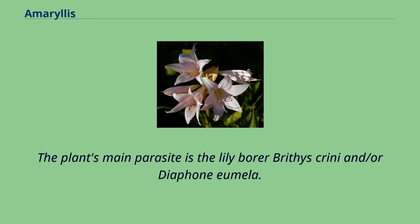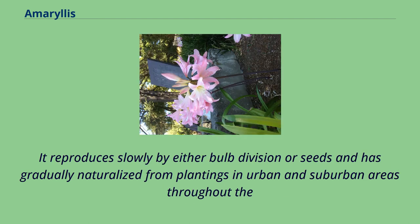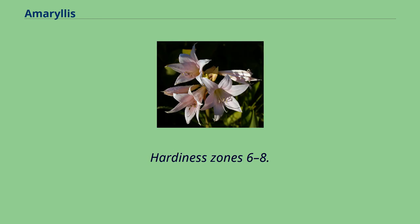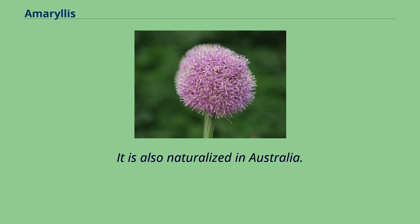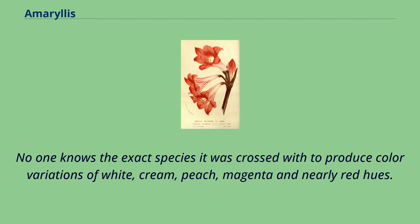The plant's main parasite is the lily borer Brithys crini and/or Diaphone humilis. Amaryllis belladonna was introduced into cultivation at the beginning of the 18th century. It reproduces slowly by either bulb division or seeds and has gradually naturalized from plantings in urban and suburban areas throughout the lower elevations in coastal areas on much of the west coast of the U.S., since these environments mimic their native South African habitat. It is also naturalized in Australia. There is an Amaryllis belladonna hybrid bred in the 1800s in Australia; no one knows the exact species it was crossed with to produce color variations of white, cream, peach, magenta, and nearly red hues.